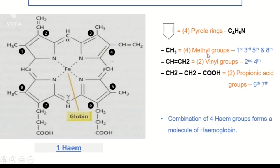There are four methyl groups in one heme structure, present at the first, third, fifth, and eighth carbon positions of the pyrrole rings. As you can see in the picture, at the first carbon there is a methyl group, at the third carbon a methyl group, at the fifth a methyl group, and at the eighth carbon a methyl group.